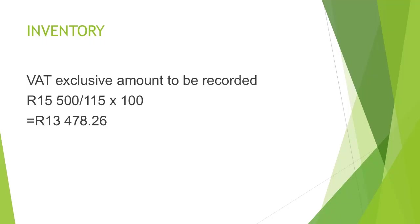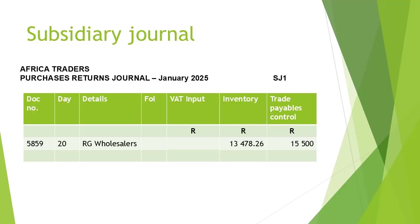In the inventory column, we will record the amount exclusive of VAT. The total amount of the transaction was 15,500 Rand. To calculate the VAT exclusive amount, you take 15,500 Rand divided by 115 multiplied by 100. Therefore, the amount to be recorded in the inventory column is 13,478 Rand and 26 cents. We record the 13,478 Rand and 26 cents in the inventory column.